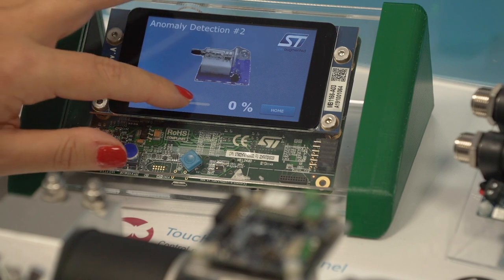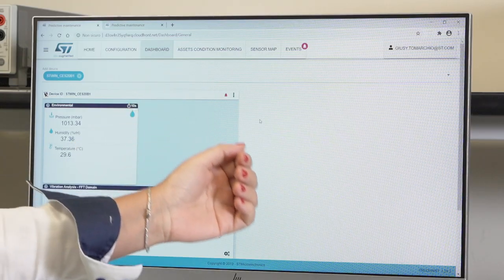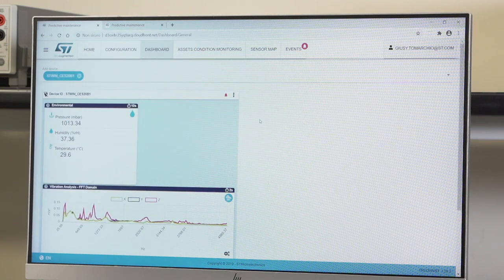Let's turn on the device. Here we see the normal behavior of the motor. Let's simulate a fault. Now you see the event that is shown and data are streamed as well.